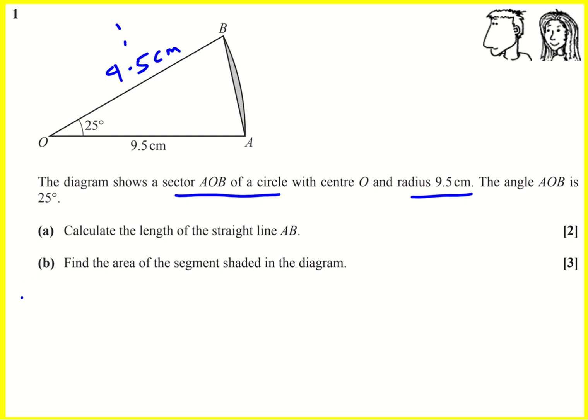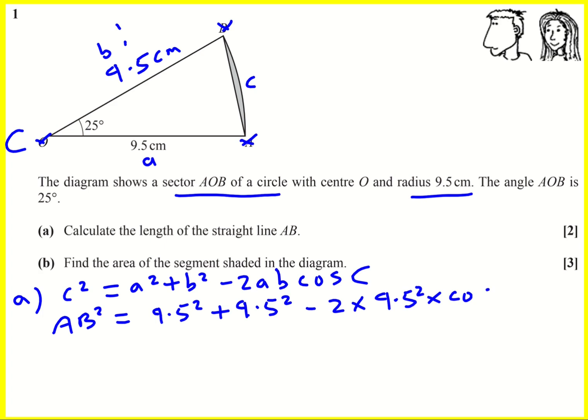Now what jumps out at me is to use the cosine rule. So I'm gonna temporarily get rid of these, call this one C, this little C, and then we've got a and B. And we can write down that c squared is a squared plus b squared minus 2ab cos capital C. And that means in our case AB squared is going to be 9.5 squared plus 9.5 squared minus 2 times 9.5 squared times cos 25.